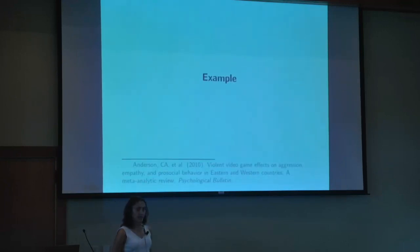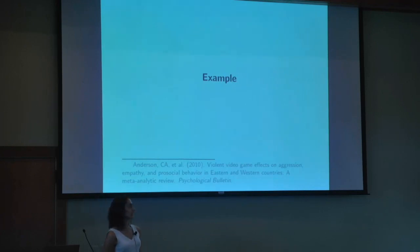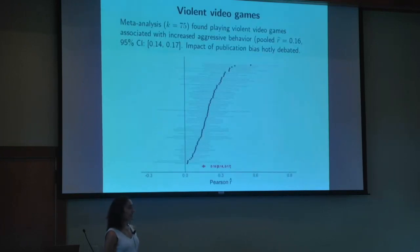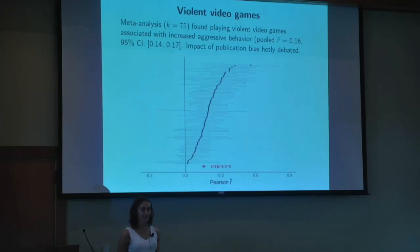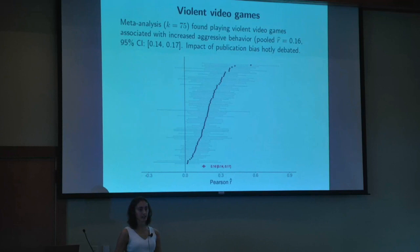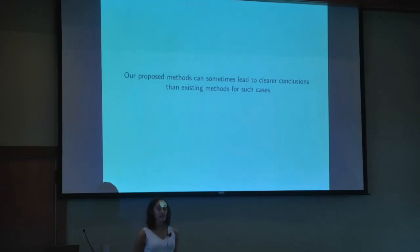Before showing you the methods I'm proposing, here's an example of a meta-analysis that has been continually controversial with respect to publication bias. It looked at 75 studies on the effects of playing violent video games on aggressive behavior and suggested a pooled correlation of about 0.16 in favor of such an association. This meta-analysis is about 10 years old and to this day is still being debated — whether the findings are robust to publication bias or might actually be explained away by it. Our proposed methods can lead to somewhat clearer conclusions.